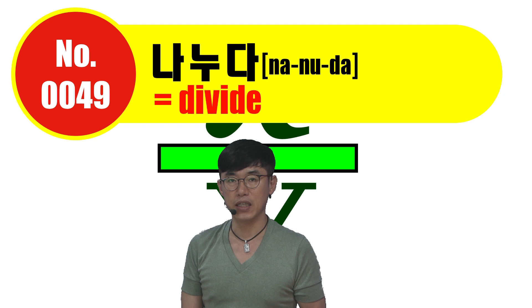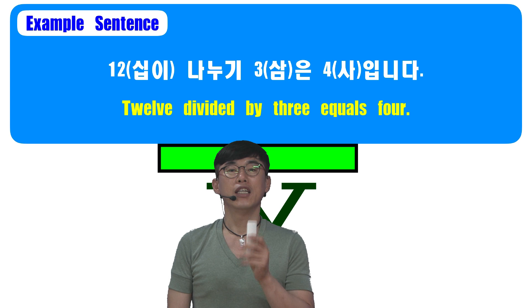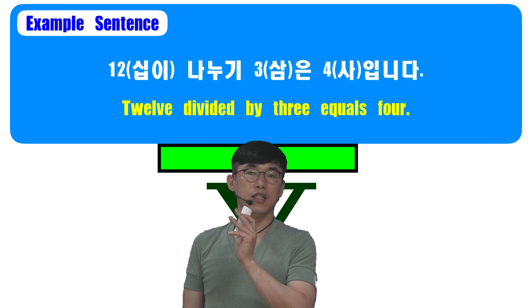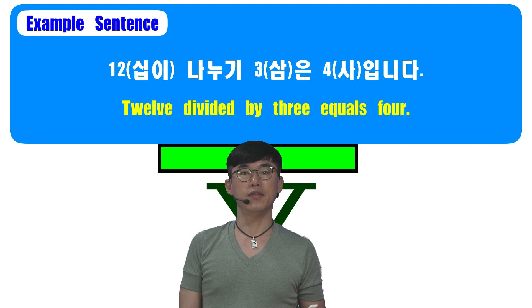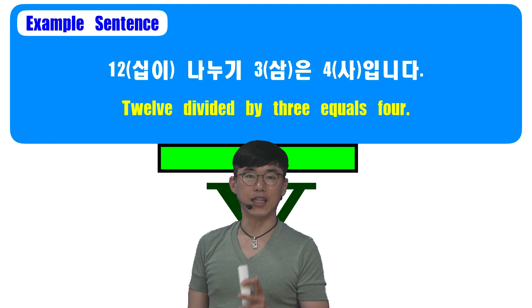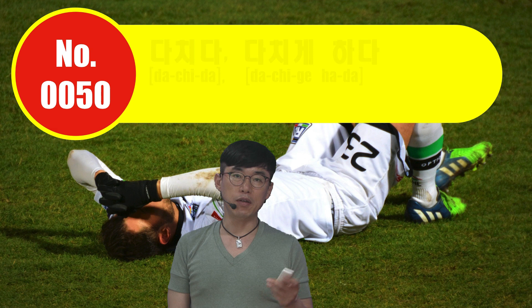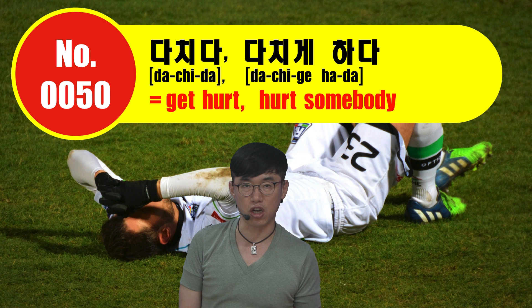Number 49 is 나누다, which means 'to divide.' 12 나누기 3은 4입니다, meaning 12 divided by 3 equals 4. Again, 다 is changed to 기 for the noun form. Number 50 is 다치다 / 다치게 하다, meaning 'to get hurt' and 'to hurt somebody.'